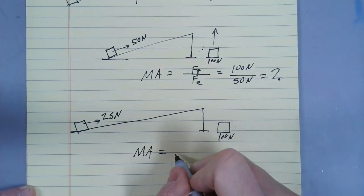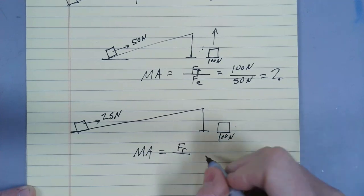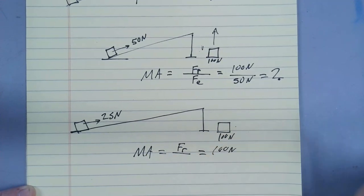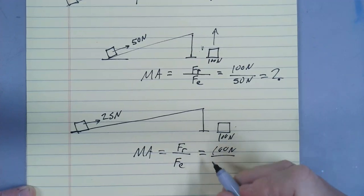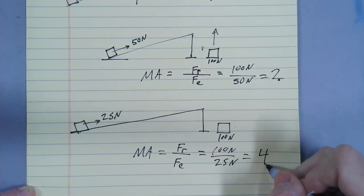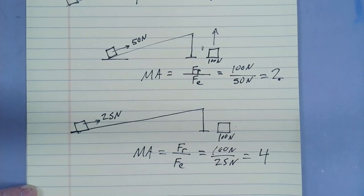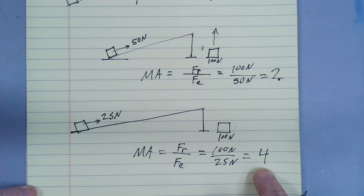The mechanical advantage of that ramp, what's the force that's resisting me? It's still the 100 Newtons of the box. How much effort did I have to put in? I only had to push with a force of 25 Newtons. So the mechanical advantage of that ramp is four. It made it seem like I was four times stronger than I was. And that's what mechanical advantage does. It describes how much does the machine help you to do the work.